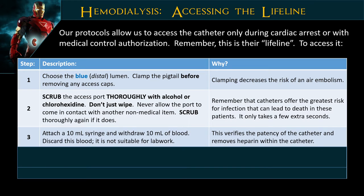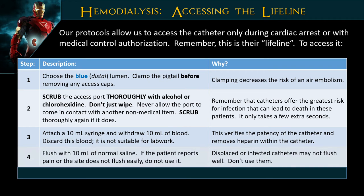Attach a 10 cc syringe and draw at least 10 cc off and discard it — a lot of times these are heparinized, so we want to draw all that heparin off. This also verifies patency and checks for a clot at the end. If it draws back and returns well, you can push through and make sure it flushes well. Then take 10 mL of normal saline, flush it in, make sure it flushes easily and flows nicely before using it.